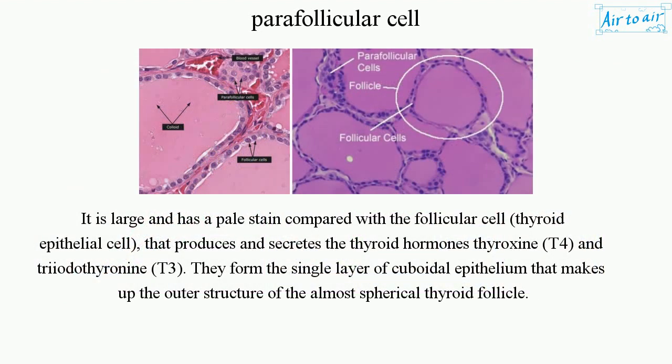It is large and has a pale stain compared with the follicular cell that produces and secretes the thyroid hormones thyroxine, T4, and triiodothyronine, T3. They form the single layer of cuboidal epithelium that makes up the outer structure of the almost spherical thyroid follicle.